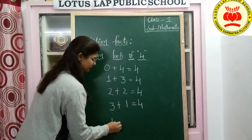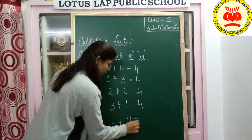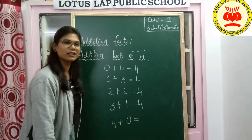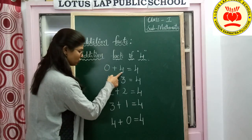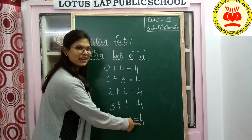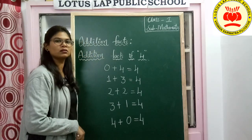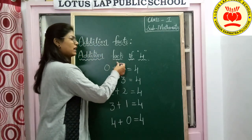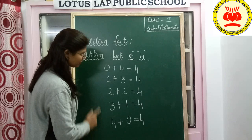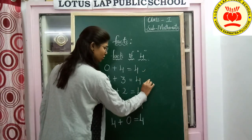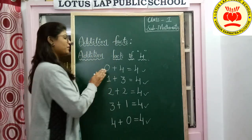Now let's try 4. Here we have to take 0. 4 plus 0 — what will be the result? 4 plus 0 is 4. You can see: 0 plus 4 and 4 plus 0, the answer is 4 only. Can we take 5 here? No — because we are finding only addition facts of 4, we cannot take 5. So how many addition facts did we get for 4? 1, 2, 3, 4 and 5. We have 5 addition facts for 4.